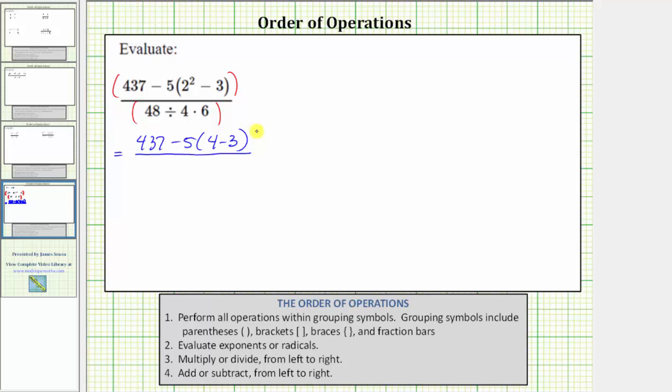And now looking at the denominator, we have division and multiplication. And division and multiplication have the same priority. Looking at step three, we multiply or divide from left to right. So working from left to right, 48 divided by four is equal to 12. The denominator simplifies to 12 times six.